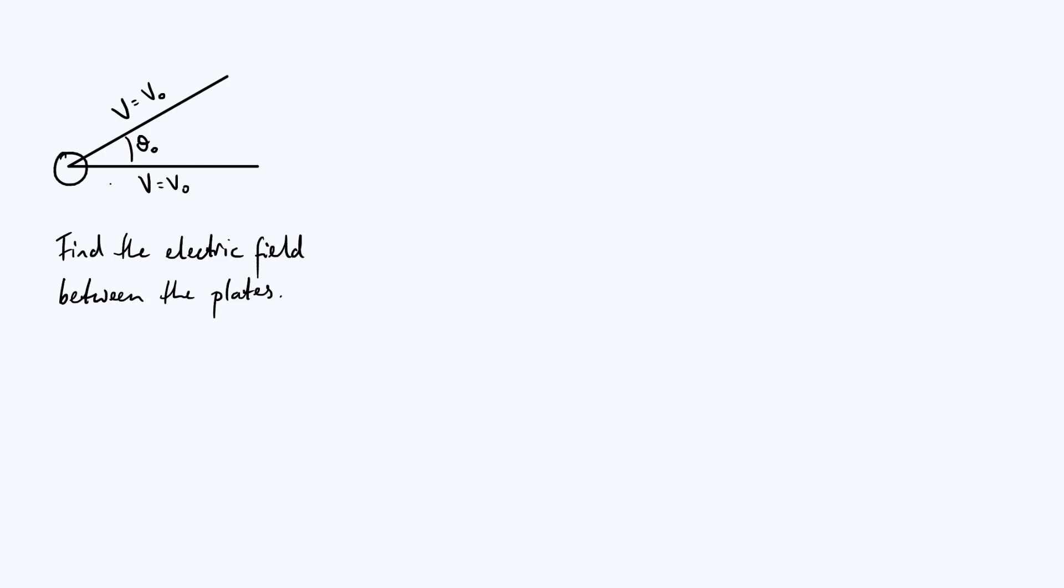And I'll also point out that we're solving this problem subject to certain boundary conditions. The boundary conditions are going to be that the potential V, electric potential V, is equal to some constant V₀ on both of those conducting plates, which makes a lot of sense because conductors are always equipotentials.